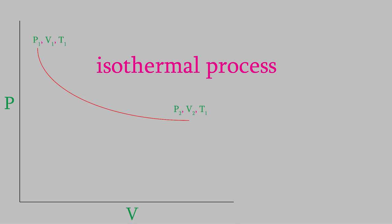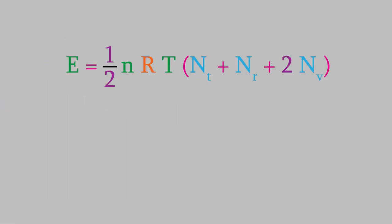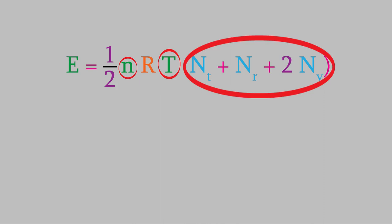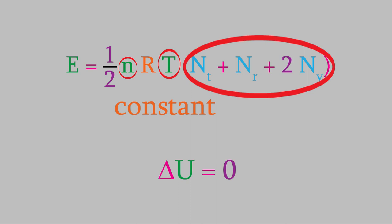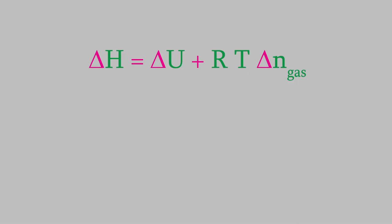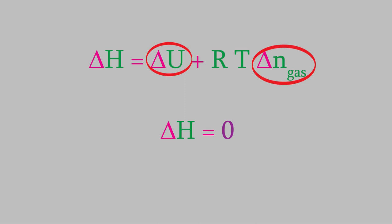Let's think about how the heat, work, energy, and enthalpy change when we perform this isothermal process. First, let's look at the energy. From video 14, we saw the equation for the energy of an ideal gas featuring the number of moles, temperature, and degrees of freedom. In our situation, all of these things are constant, and since this is an isothermal process, T is constant too. That means the energy won't change, so delta U is zero. And using the equation for enthalpy, since delta U is zero and the number of moles of gas aren't changing, delta H is equal to zero too.